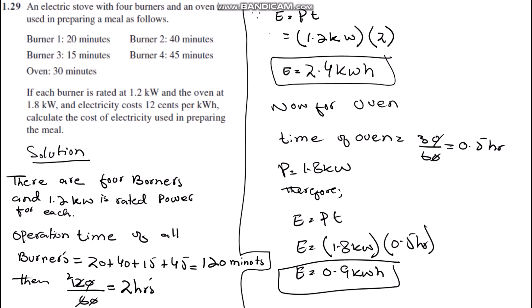Hello everyone, today we are going to solve question number 1.29. The question is: an electric stove with four burners—burner 1, burner 2, burner 3, and burner 4. Burner 1 is used for 20 minutes, burner 2 for 40 minutes, burner 3 for 15 minutes, and burner 4 for 45 minutes.